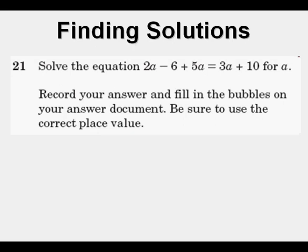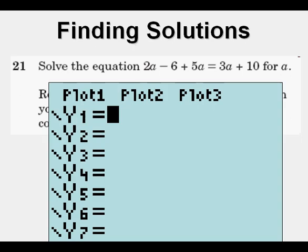Next problem: solve the equation 2a - 6 + 5a = 3a + 10 for a. This one does not have multiple choice — it asks for a numerical answer. But it's easy to do and a great candidate for a test-taking trick.